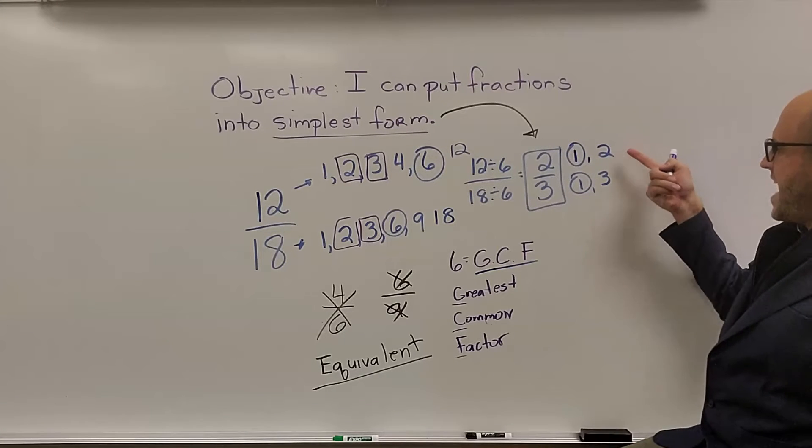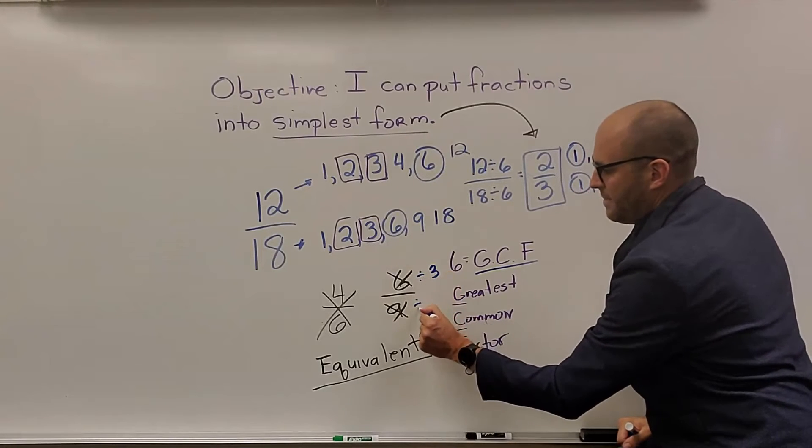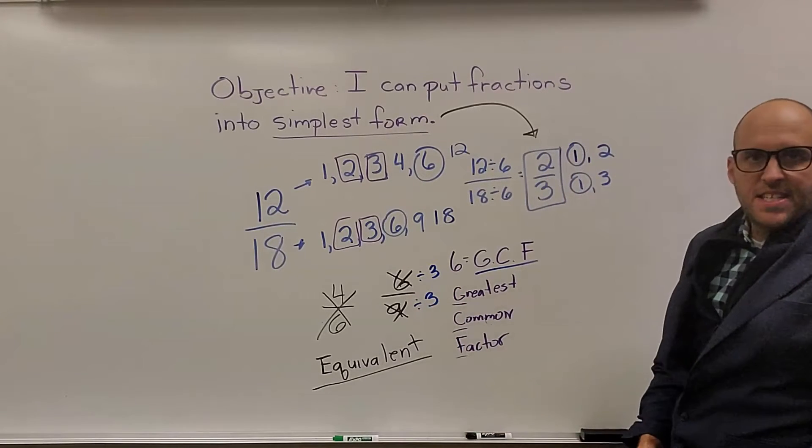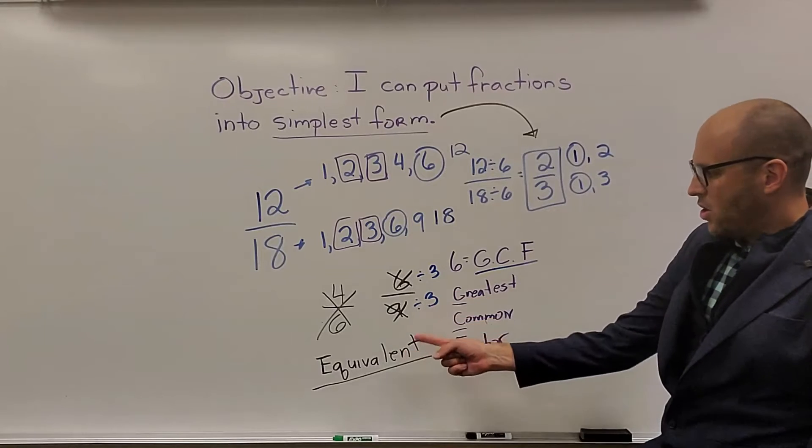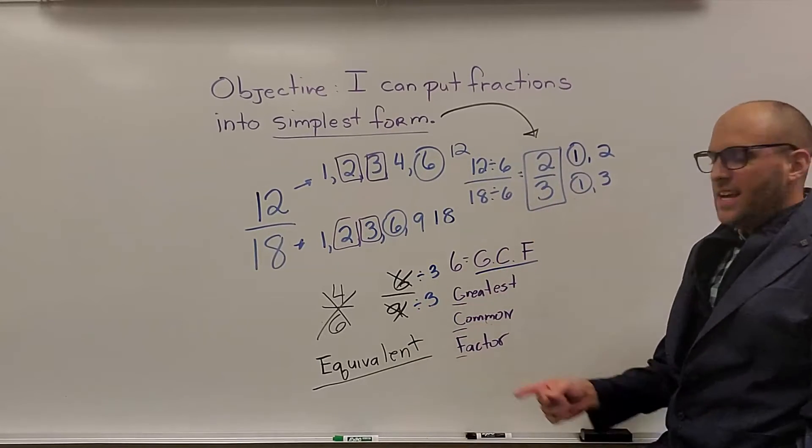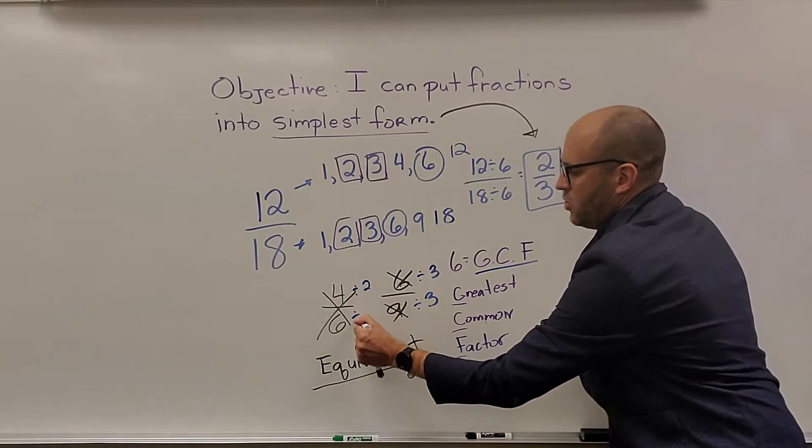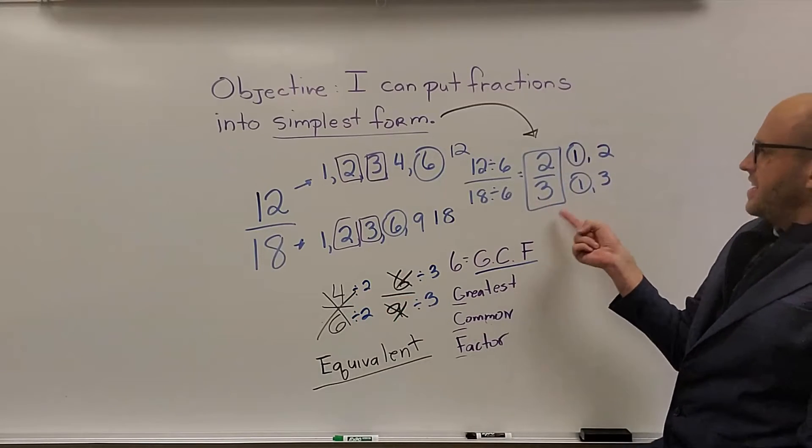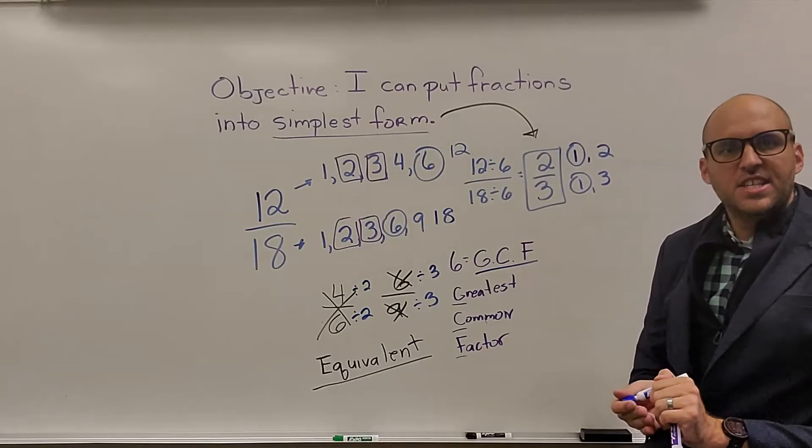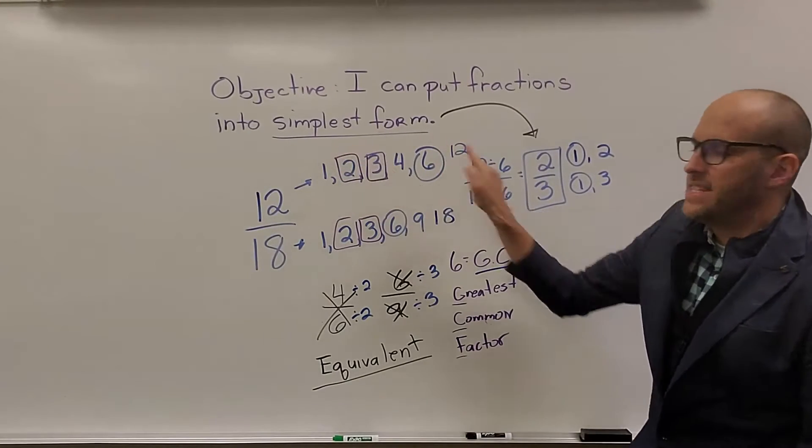If one of these fractions had a 2 or a 3, like down here in this one, both of these can be divided by 3. That means it's an equivalent fraction. We can go deeper. Notice 6 divided by 3 is 2. 9 divided by 3 is 3. So if you keep going, even with these fractions, this one you divide by 2, you're always going to end up with two-thirds. It's the smallest version of the fraction, meaning it's in simplest form.